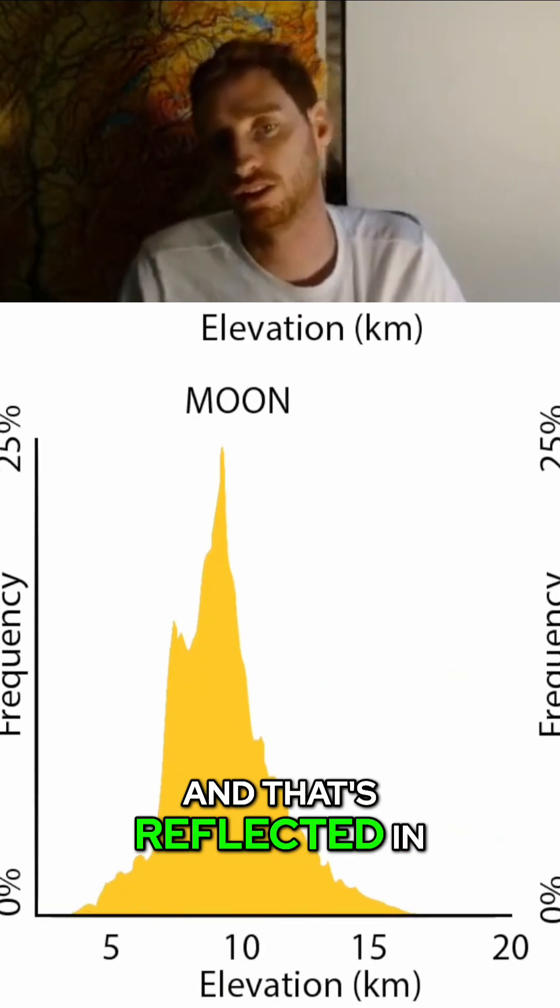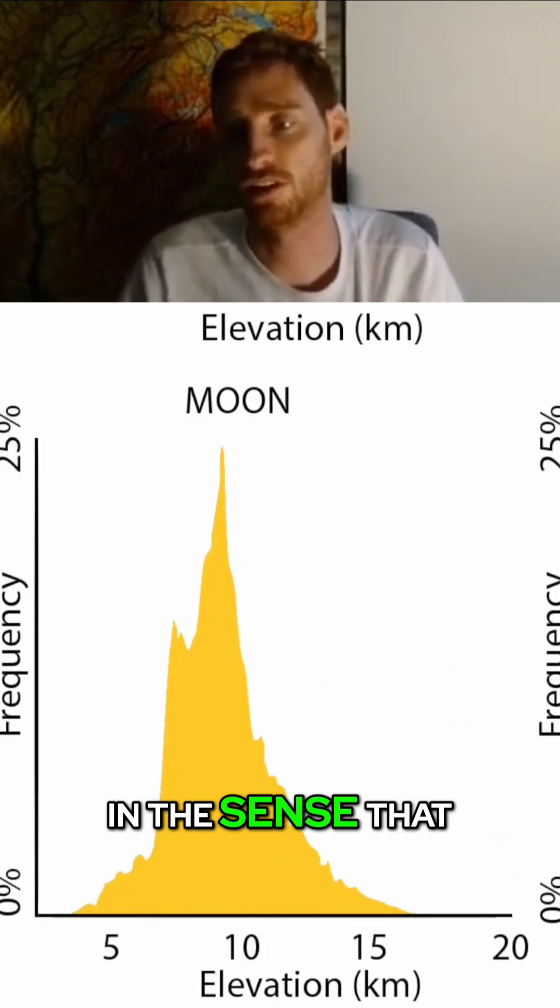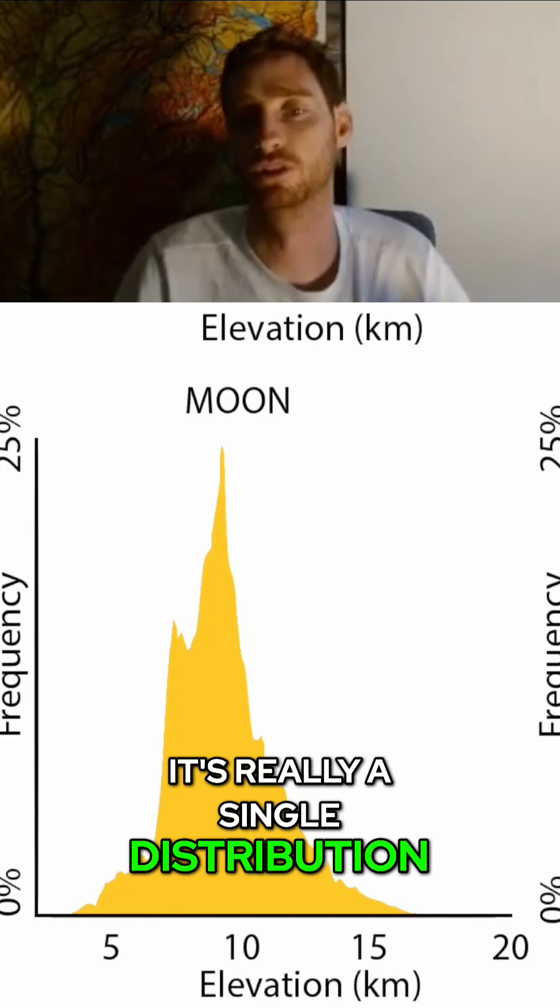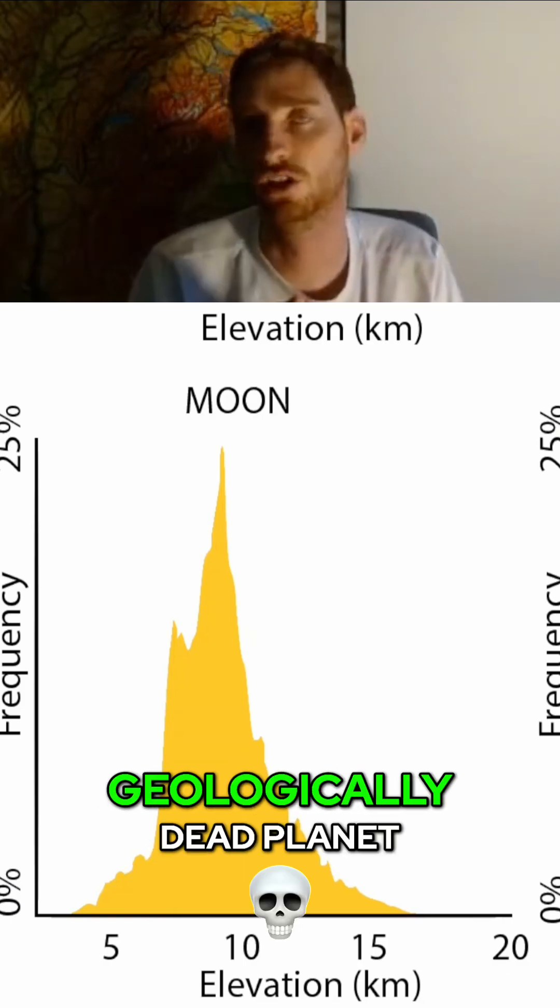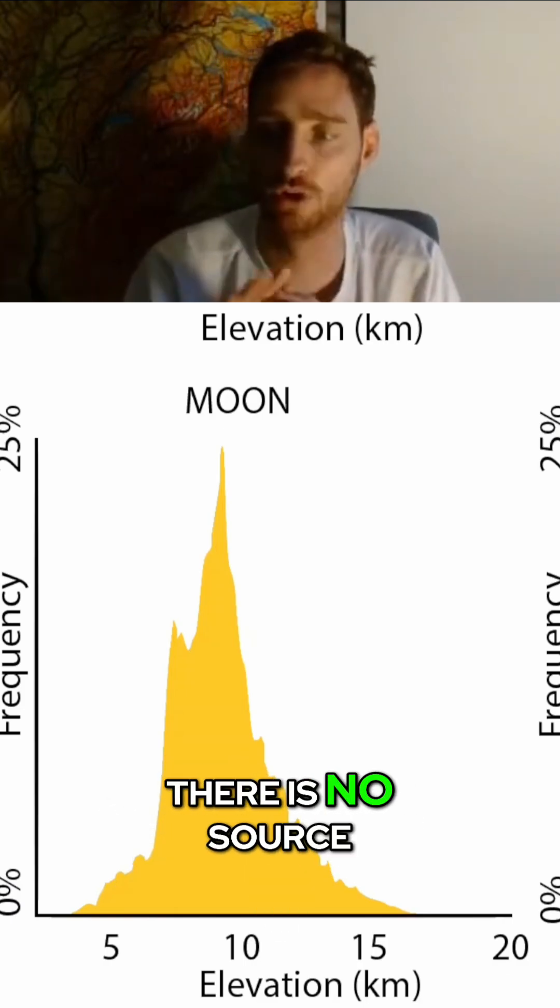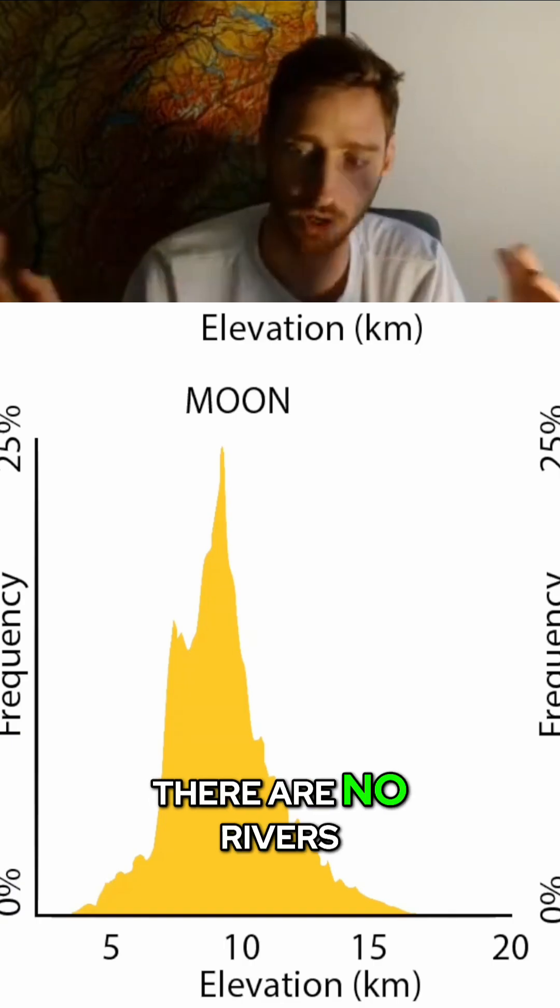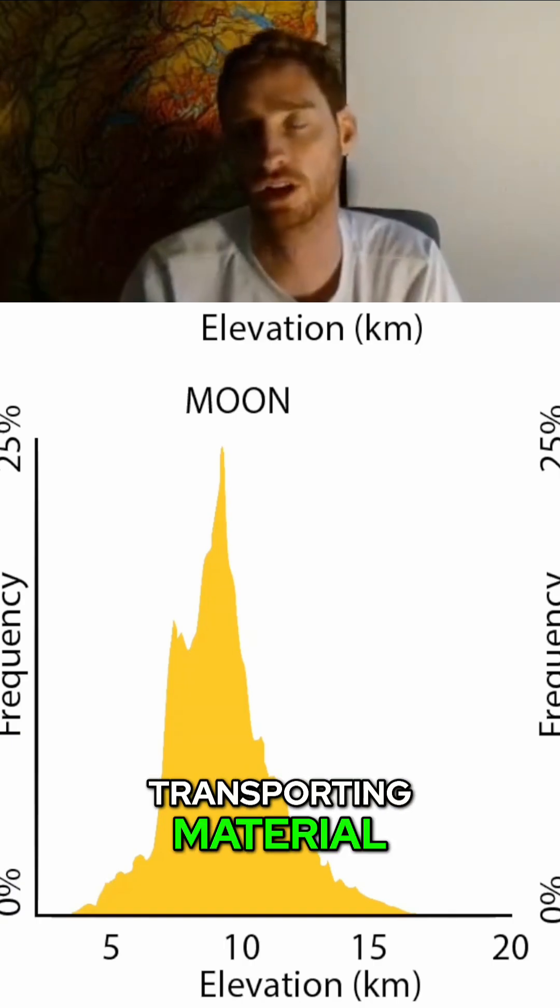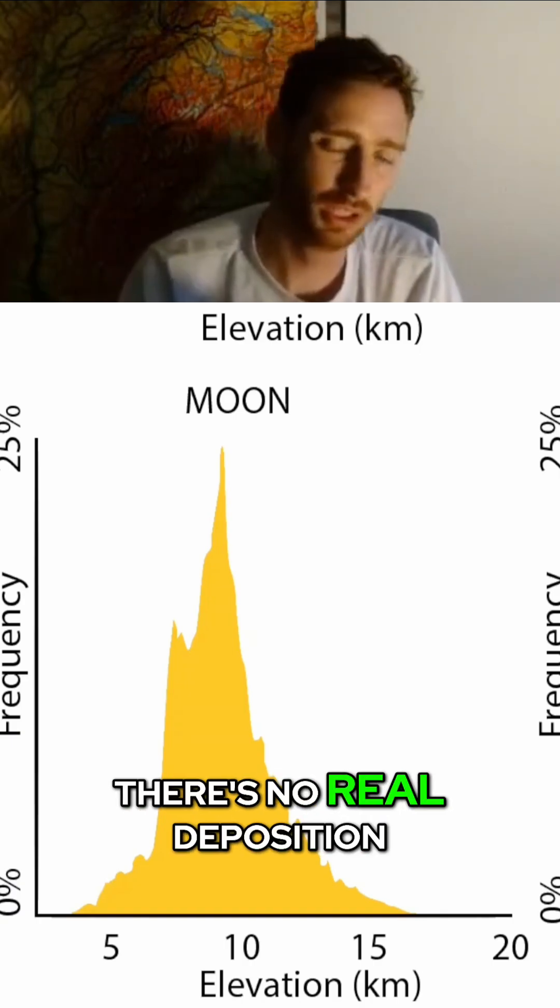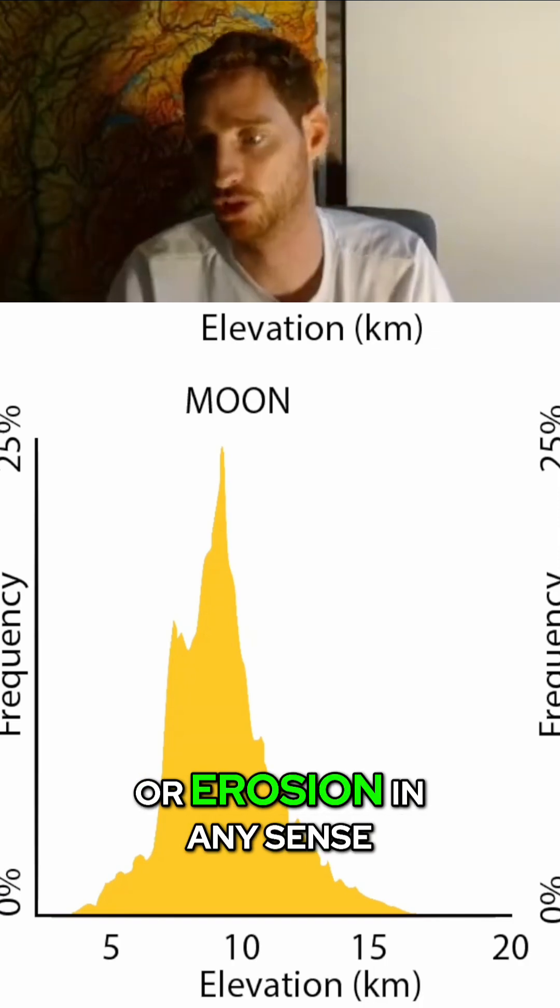And that's reflected in this graph in the sense that it's really a single distribution. So it's basically a geologically dead planet. There is no source to sink. There are no rivers transporting material. There's no real deposition or erosion in any sense.